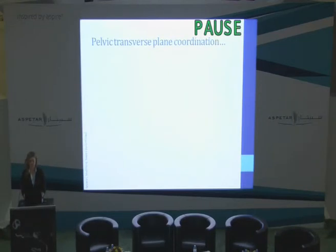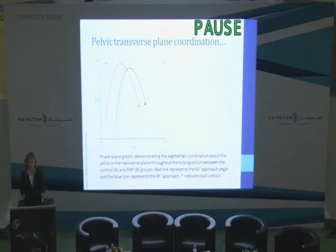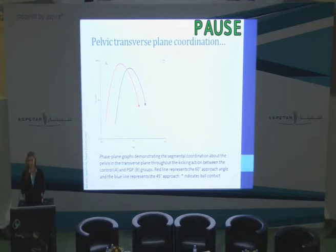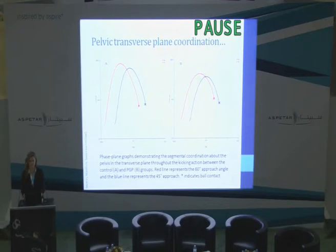We also found differences in coordination. In this phase plane graph — pelvic motion in the transverse plane for the control group — displacement is on the x-axis and velocity on the y-axis, demonstrated from backswing through to ball contact marked by a little x. The blue line represents 45 degrees and red represents 60 degrees. We see the same curve shape, just shifted back approximately 15 degrees with the altered approach angle. In the PGP group, the curves reach much lower peak velocity, and although there is a 15-degree discrepancy at backswing, by peak velocity and then ball contact they are definitely not 15 degrees apart anymore.